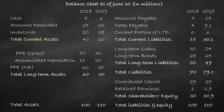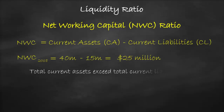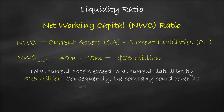Current assets is equal to $40 million minus current liabilities of $15 million, which is equal to $25 million. The unit of net working capital ratio is a dollar. So this means that the total current assets exceed total current liabilities by $25 million.